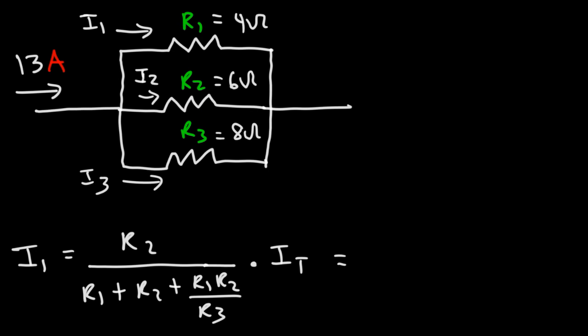So R2 is 6 ohms. R1 is 4 ohms. R2 is still 6. And then R1 times R2, that's 4 times 6, divided by R3, which is 8, times the total current, which is 13.